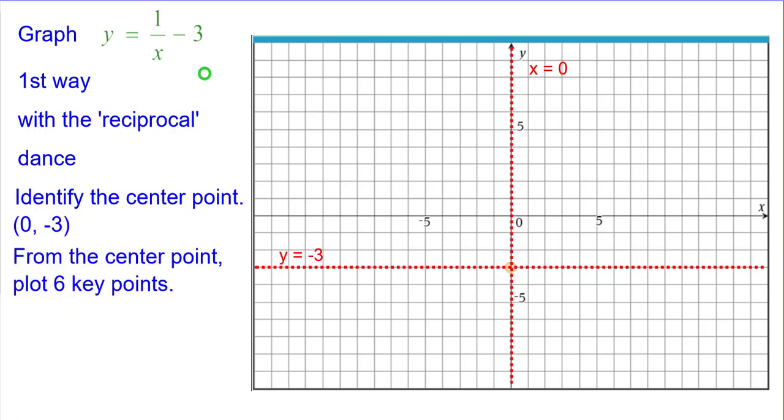From the center point, we'll use that as our starting point. We're going to plot six key points. The first one will be right 1 up 1 from there because the reciprocal of 1 is 1.